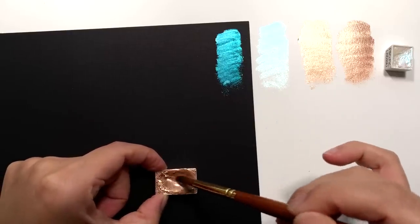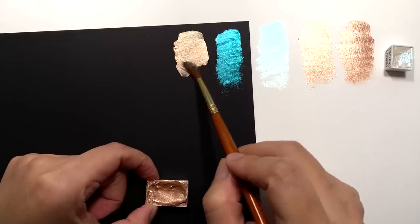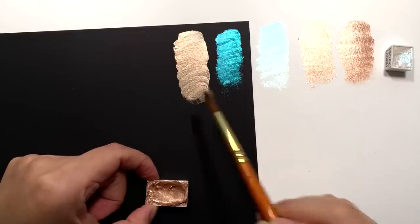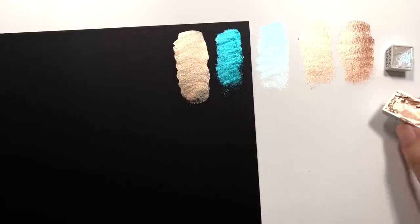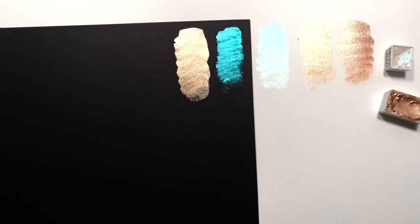Definitely an interference color. Let's try the rose gold on black as well. Metallics and interferences, all those colors do really well seen on black paper. Wow, look at how intense and packed that color is. That is beautiful.